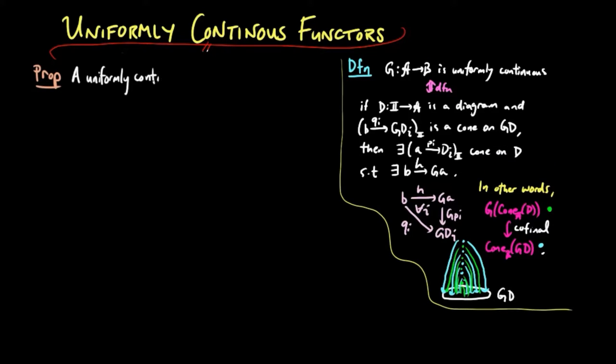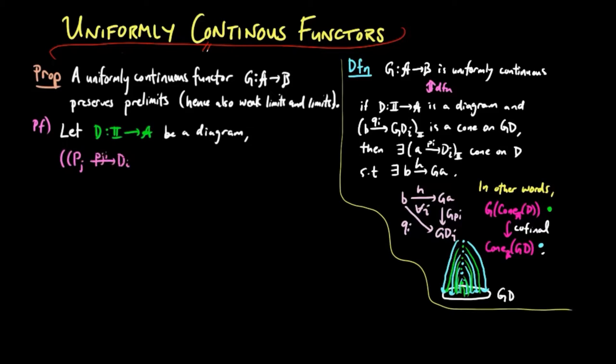We have the following proposition. A uniformly continuous functor G preserves pre-limits, and hence weak limits and limits, as we showed last time. To prove this, let D be a diagram, PJI a pre-limit for D, and QI a cone on GD.